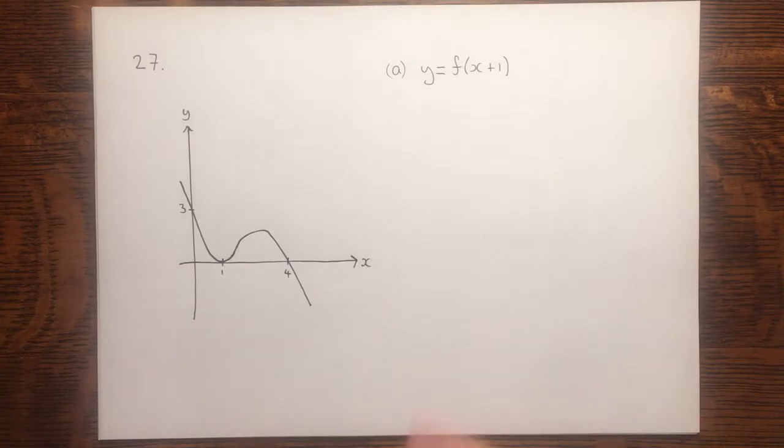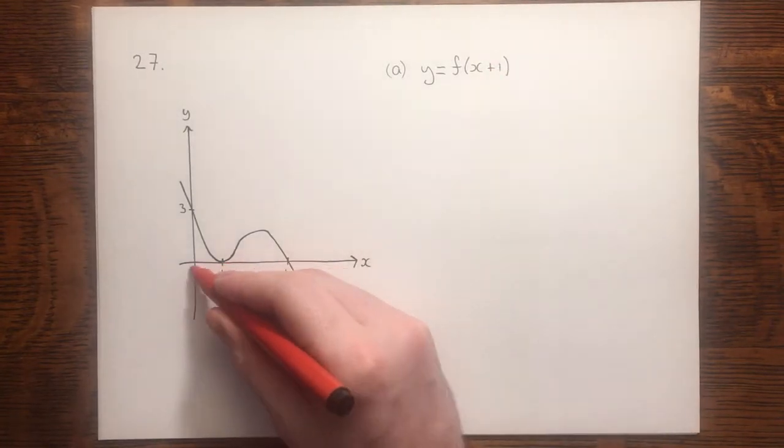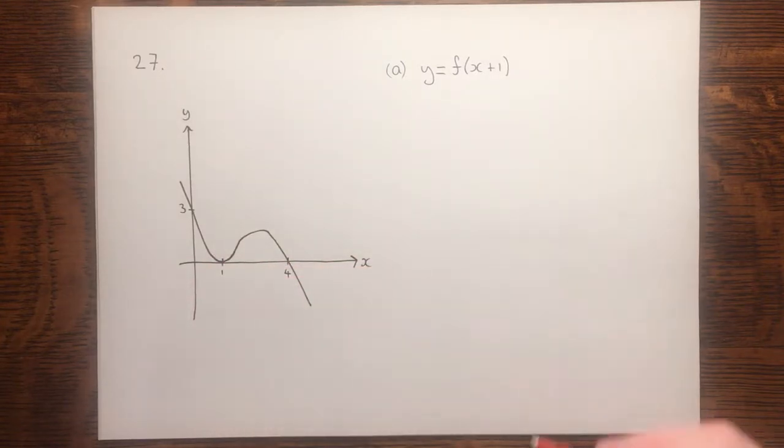In order to do this, we need to translate every point one unit to the left. This point here will be on the origin, and this point here will be at x equals 3.